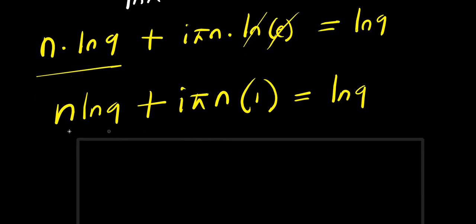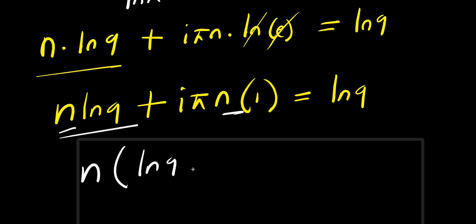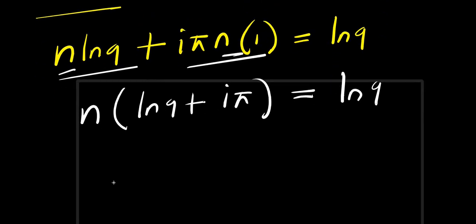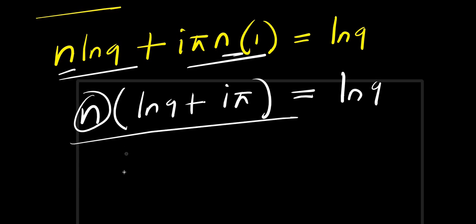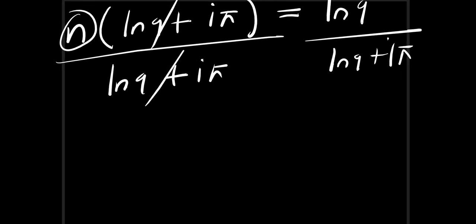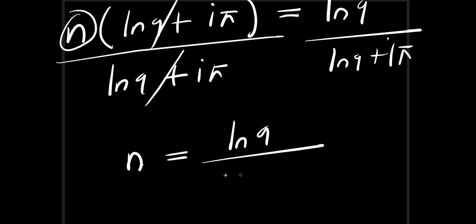There is n here and n here, so we can factor n out. Factoring n, we have n times the quantity ln 9 plus i times pi equals ln 9. Dividing both sides by ln 9 plus i times pi gives us n equals ln 9 divided by ln 9 plus i times pi.